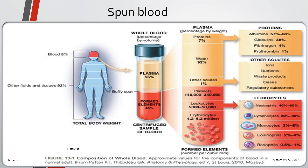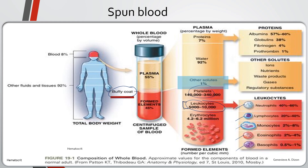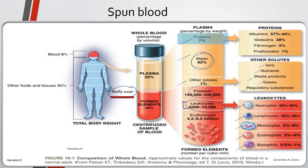The buffy coat contains leukocytes — including neutrophils, lymphocytes, monocytes, eosinophils, and basophils — and platelets, with platelets sitting on top of the leukocytes since leukocytes are heavier. The plasma portion can be divided into three sub-layers: at the lowest part are other solutes including ions, nutrients, waste products, gases, and regulatory substances; water makes up most of the plasma; and at the very top are proteins such as albumin, globulin, fibrinogen, and prothrombin.